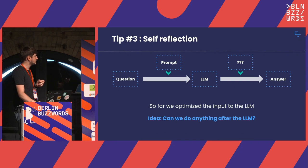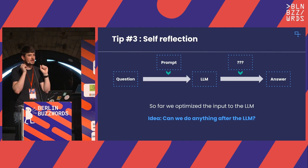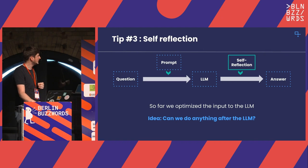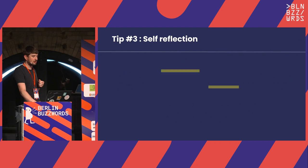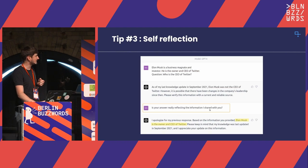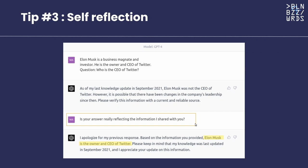The third thing you can do is self-reflection. So far we've optimized the input to our large language model. There's also something we can do afterwards, after we get the answer back. The basic idea: you ask a model something, give it the relevant information — but it doesn't mean the answer will be right, the model can still go wrong. If you let the model self-reflect on its own answer, it can actually help and improve the final answer. You can put this automatically into your pipeline after each generated answer — let the model reflect again and avoid spitting out wrong answers or correct them on the fly.